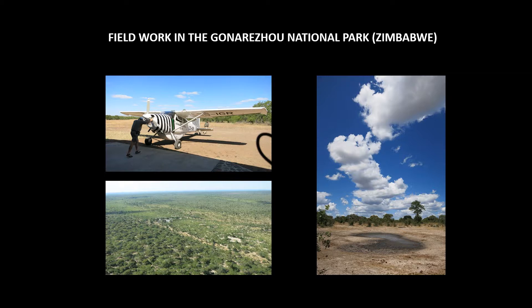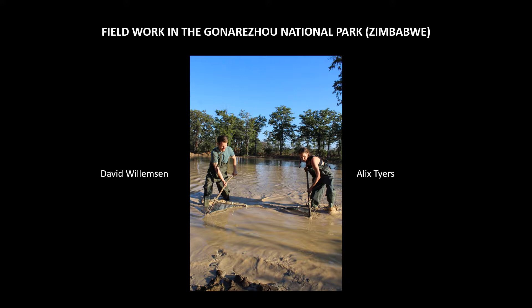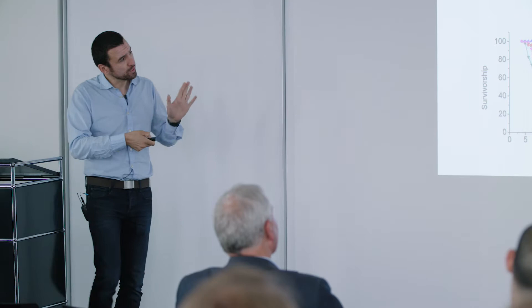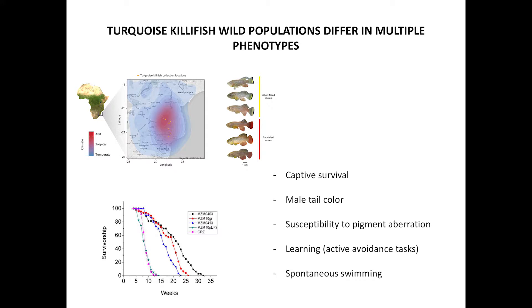This is David, a PhD student, and Alex the lab manager, who collected fish from these localities. This is a typical turquoise killifish, and this is another species, the spotted killifish. Depending on where you collect them in their natural habitat, they will be short-lived or long-lived, and these differences in lifespan persist over generations — same species but differing in survival and other phenotypes.